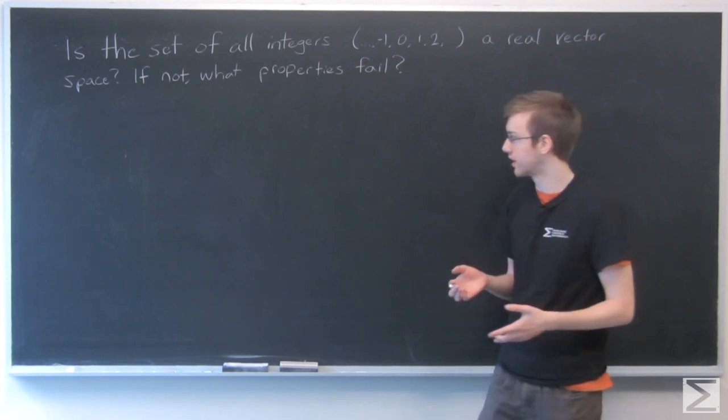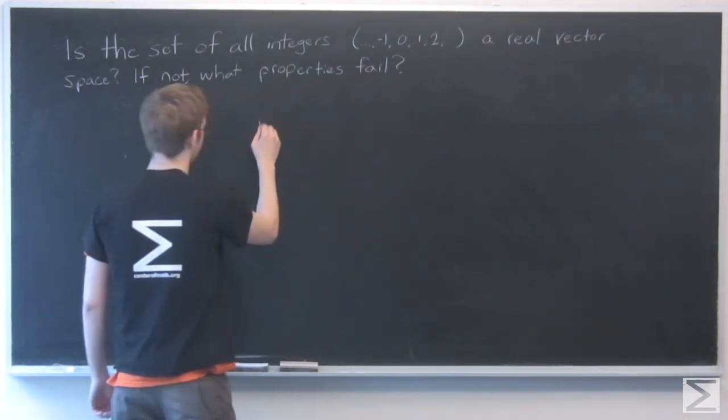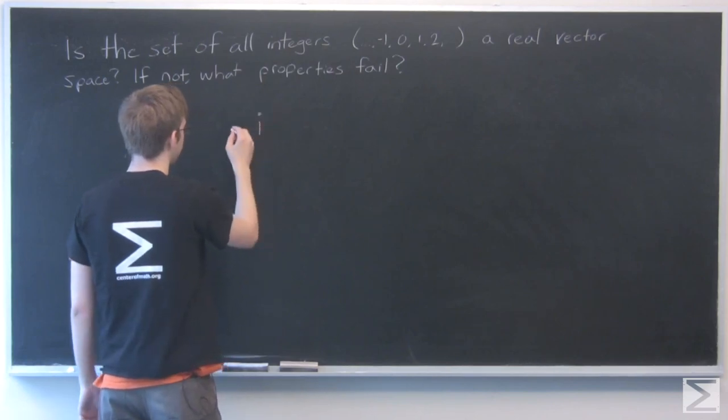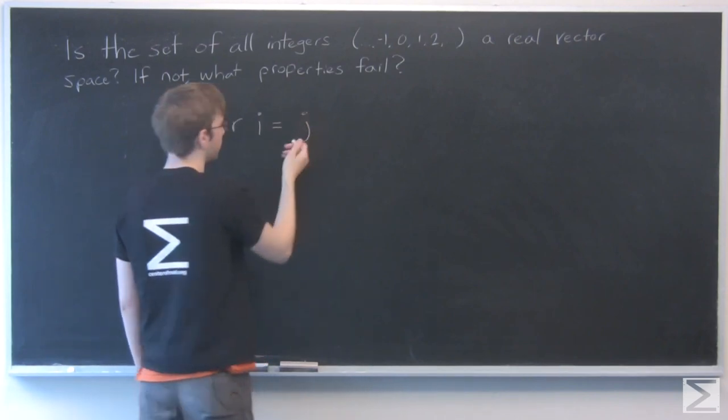However, when I think about scalar multiplication, if we take an integer i and multiply it by a scalar r, we would get another integer j.